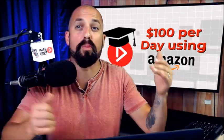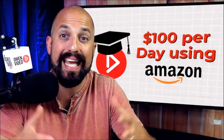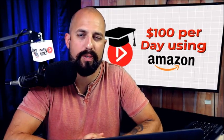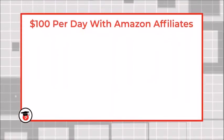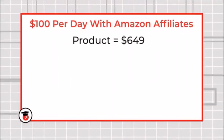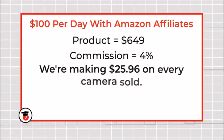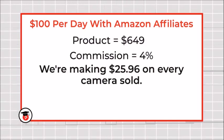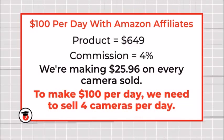Add that custom Amazon link to the description box of each of your YouTube videos. You're going to make a lot of videos per product that you pick, and over time you'll be getting enough views and enough clicks to equal $100 per day. For example, if we're selling a camera worth $600 and our commission is 4%, we're making $25.96 on every camera sold. In order to make $100 per day, you only need to sell 4 cameras per day.